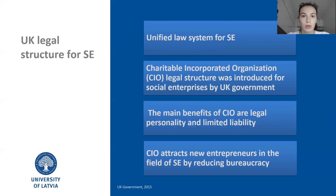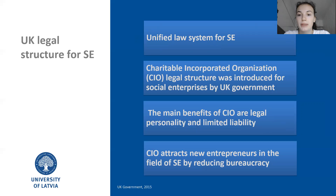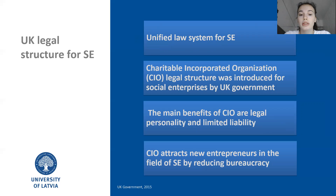Let us look at the UK legal structure. The United Kingdom has a unified law system regarding social entrepreneurship and they set up goals for helping social enterprises to achieve their purposes easier and more effectively since 2015. A new legal structure was introduced for social entrepreneurship and it is called Charitable Incorporated Organization. The main benefits of this structure are first of all legal personality, so a charity enterprise can sign contracts, hold property, or sue somebody or something.